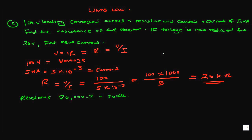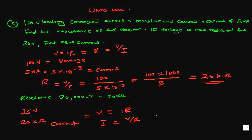The next question is: if the voltage is now reduced from 100 volts to 25 volts, what is the new current? We still have a circuit resistance of 20 kilohms. I = V/R, which gives us 25 divided by 20,000 — that's 1.25 milliamps.